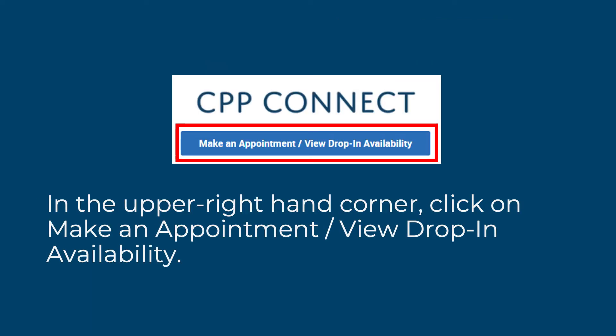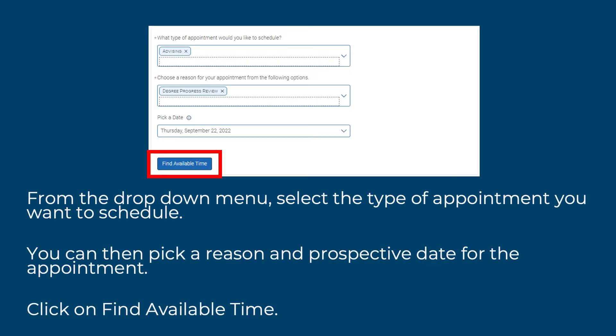In the upper right-hand corner, click on Make an Appointment / View Drop-in Availability. From the drop-down menu, select the type of appointment you want to schedule. You can then pick a reason and prospective date for the appointment.